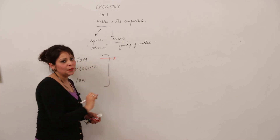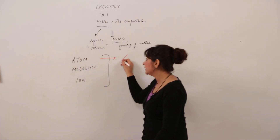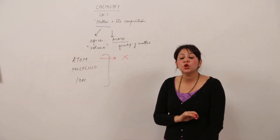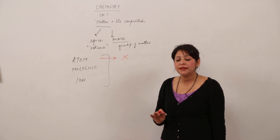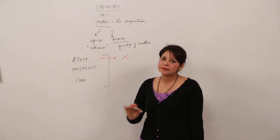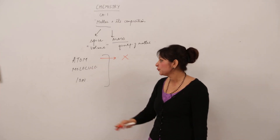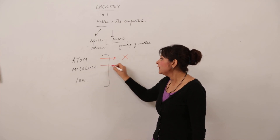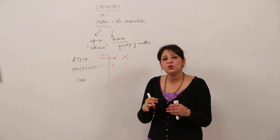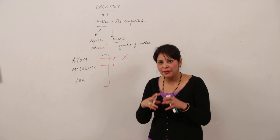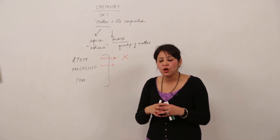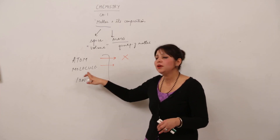Atom is the smallest particle which does not exist independently — keep in mind, atom does not exist independently. A molecule is formed by the combination of atoms: when two or more atoms combine, they form a chemical bond and they form a molecule.